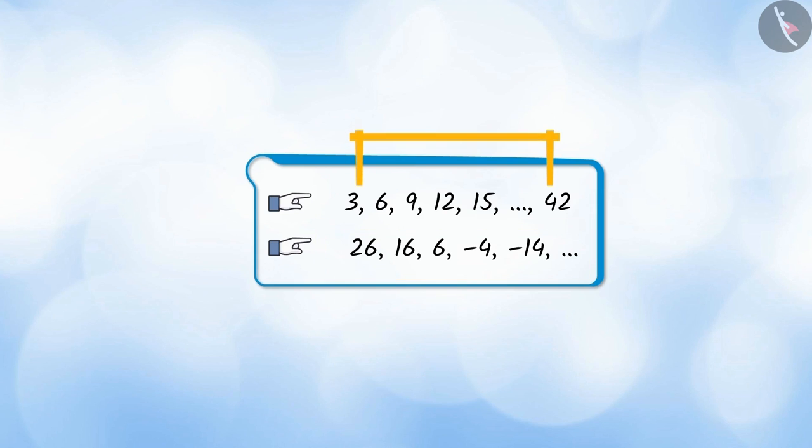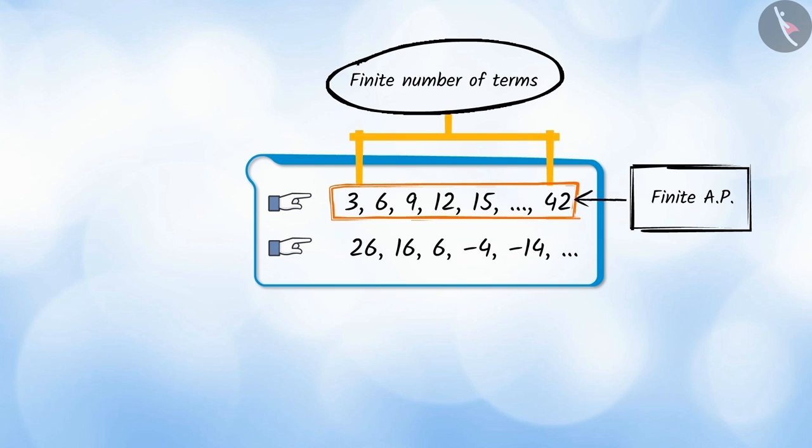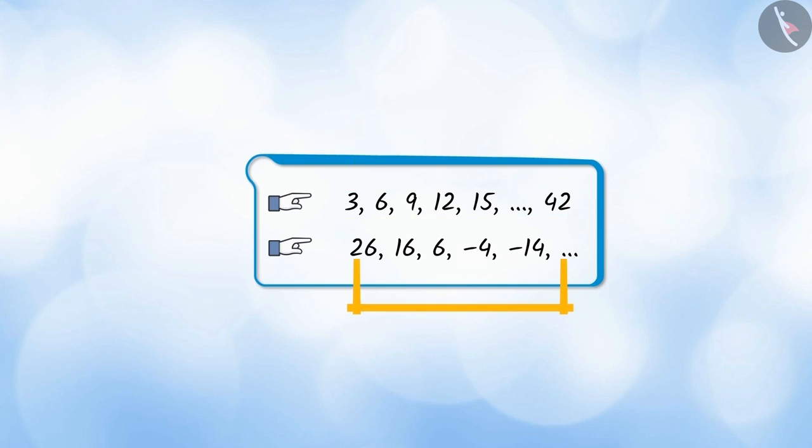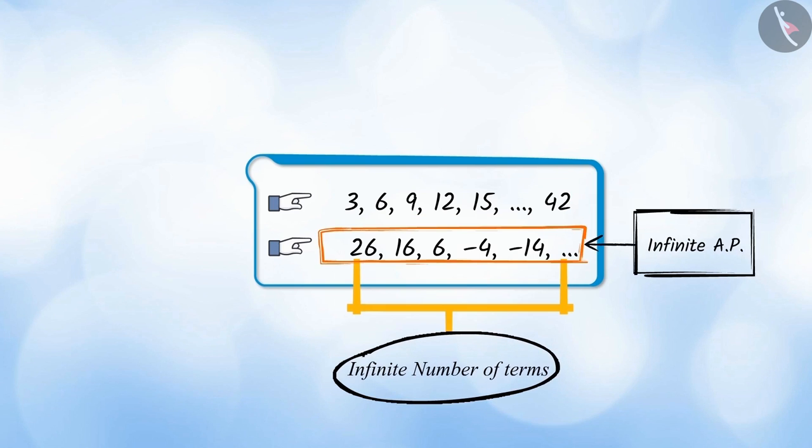If we observe the first AP, the number of terms is fixed. Such an AP is called finite AP. And the second AP does not have the last term, i.e., the number of terms is not fixed. Such an AP is called an infinite AP.